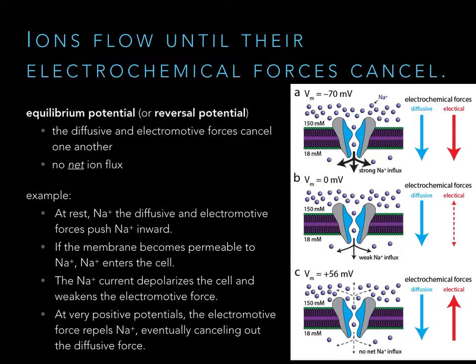This continues until the membrane potential reaches what we call the equilibrium potential or reversal potential — they're the same thing. That's the membrane potential at which the electrical force offsets the diffusive force, so there's no net flux of that ion. Sodium still moves through any open sodium channel, but there's just as much coming in as leaving because there's no net force. So when you open an ion channel, that ion continues to move until the membrane potential becomes the reversal potential for that ion.